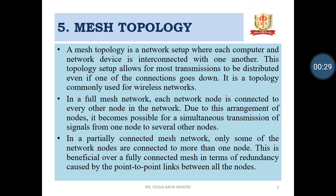Mesh Topology: A mesh topology is a network setup where each computer and network device is interconnected with one another. This topology setup allows for most transmissions to be distributed even if one of the connections goes down. It is a topology commonly used for wireless networks. In mesh topology, every device is physically connected to every other device with a point-to-point dedicated path. The term dedicated means that the link carries data only between the two devices connected on it. Mesh topology is also called a complete topology. It does not have a traffic congestion problem because dedicated lines are used to connect the nodes and these links are not shared.